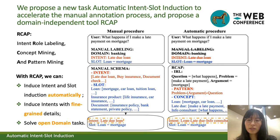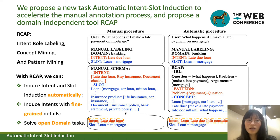Thus, we propose a new task for automatic intent-slot induction to accelerate the manual annotation process. We also propose a domain-independent tool called RECAP to solve this task. RECAP is named from its three components: R is from Internal Role Labeling, C is from Concept Mining, and P is from Pattern Mining. We will go through the three steps later.